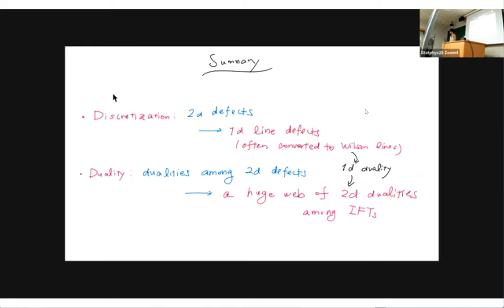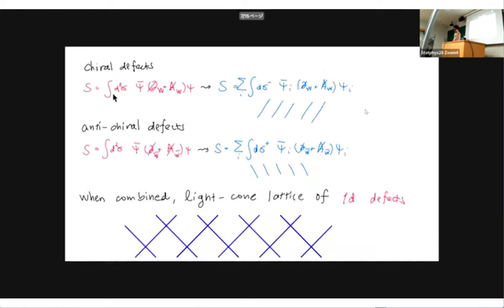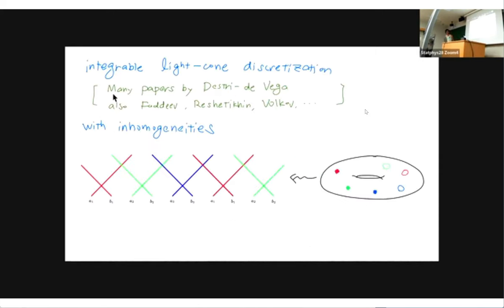Second question from audience: [about colored lines and permutations in the spin chain construction]. The speaker responds: In general, for example with three colors, whenever there is one of the lines there are three colors, and there are ambiguities in how to position them — you can permute them. The statement is that you can describe different-looking integrable lattice models — different inhomogeneities — where you permute the colors. All these theories should flow to the same integrable quantum field theory, giving different integrable discretizations of the same integrable quantum field theory.